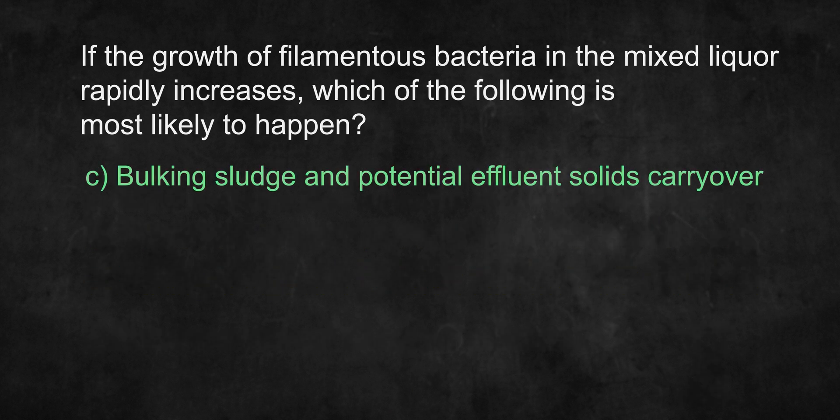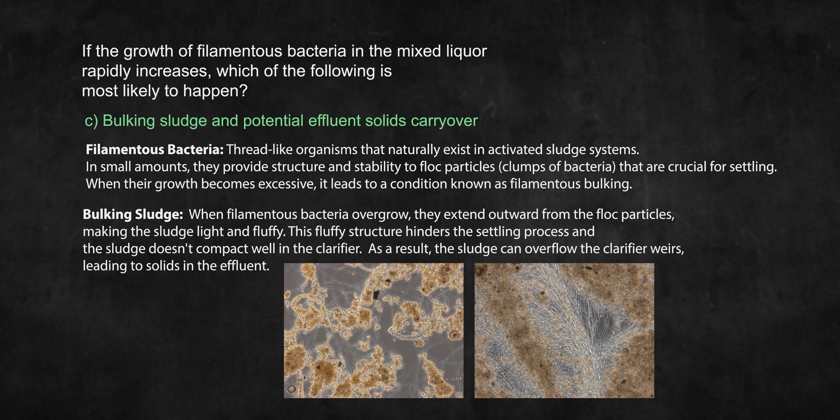The answer is C: bulking sludge and potential effluent solids carryover. Filamentous bacteria are thread-like organisms that play an important role in activated sludge systems. They're necessary in small amounts because they provide structure and stability to flock particles. However, excessive and uncontrolled growth of filamentous bacteria will lead to a condition known as filamentous bulking, also commonly referred to as bulking sludge. Bulking sludge under a microscope may look similar to the pictures on the screen.